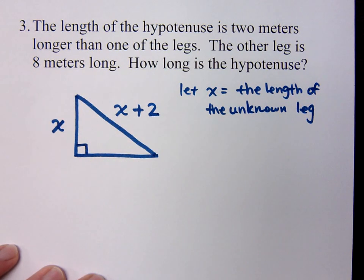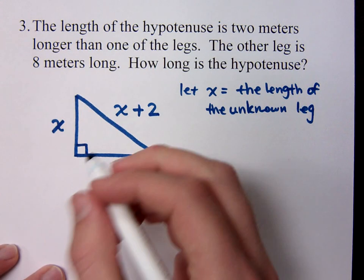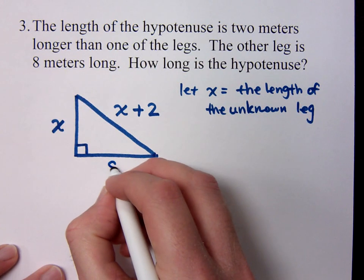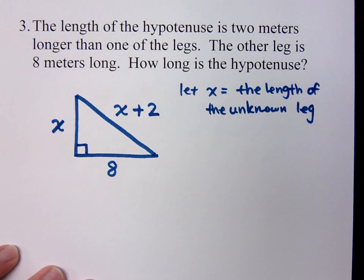Because if it had said less than, you wouldn't say 2 minus, you would say x minus 2. And it says the other leg, so there's somebody we know, and this guy is 8. Do you all agree?